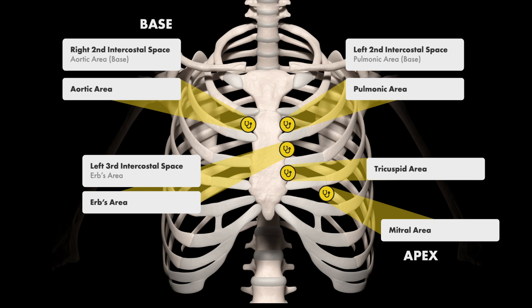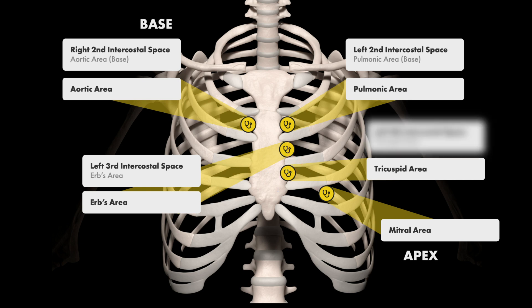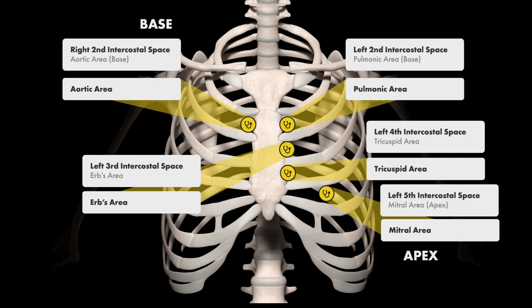The tricuspid area is described as the left lower sternal border at the fourth intercostal space, and the mitral area as the apex located at the fifth intercostal space at approximately the midclavicular line.